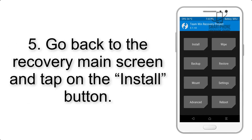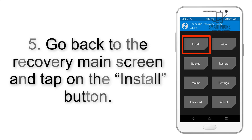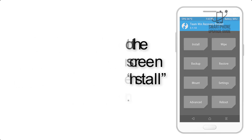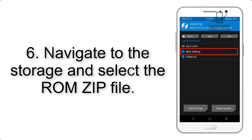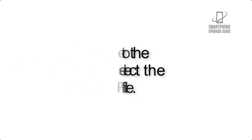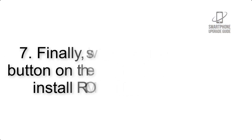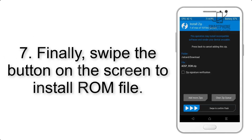Step 4: Swipe the button to wipe the device. Step 5: Go back to the recovery main screen and tap on the Install button. Step 6: Navigate to the storage and select the ROM zip file.